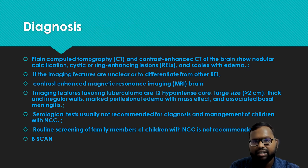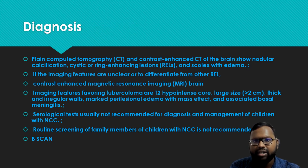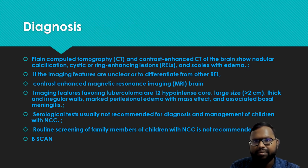What are the features of tuberculoma on MRI? On T2, we can get a hypointense core with large size — more than 2 cm — with thick and irregular walls. There is marked irregular edema with mass effect, and there may be associated basal exudate.